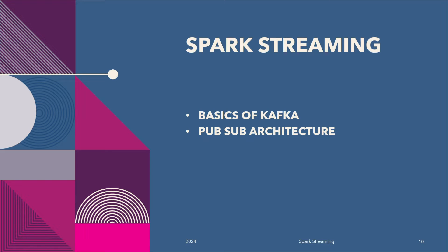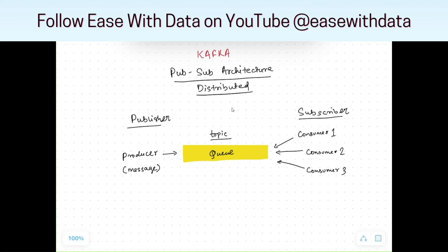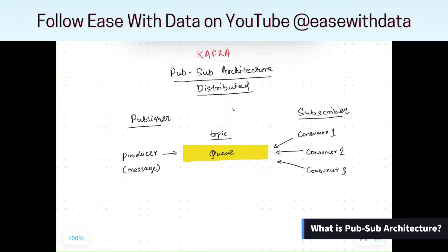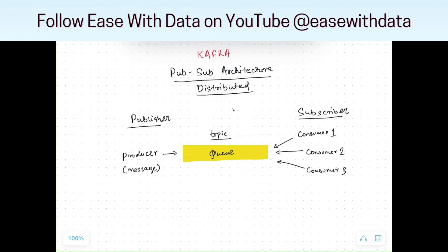Let's go ahead and understand some of the popular terminology and how Kafka works. When we talk about Kafka, the popularity of Kafka came with pub-sub architecture — it means publisher and subscriber architecture. Kafka is one of the most popular open-source distributed streaming event services. You can also consider Kafka as a messaging queue.